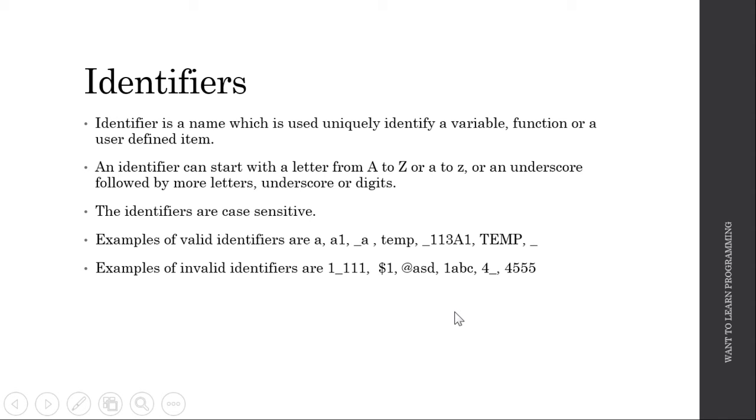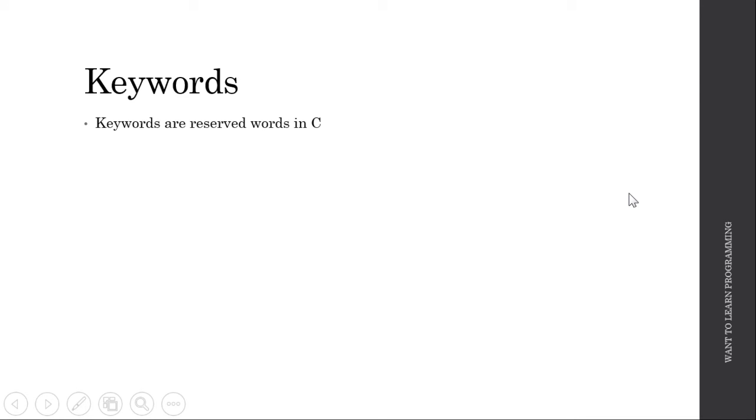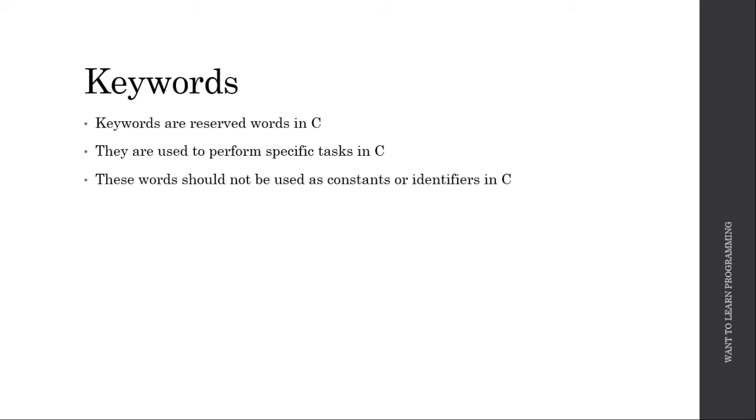Now let's look at what keywords are. Keywords are reserved words in C. They are used to perform specific tasks in C—the C compiler has reserved some words which instruct the compiler to do specific tasks. These words should not be used as constants or identifiers.